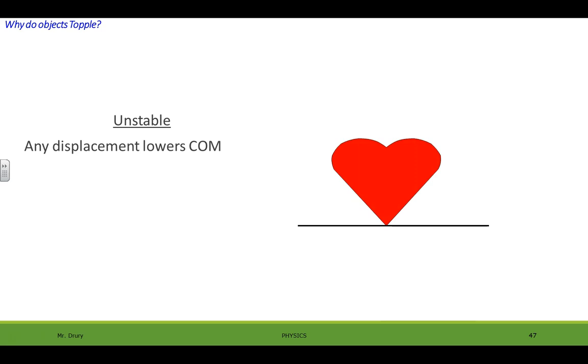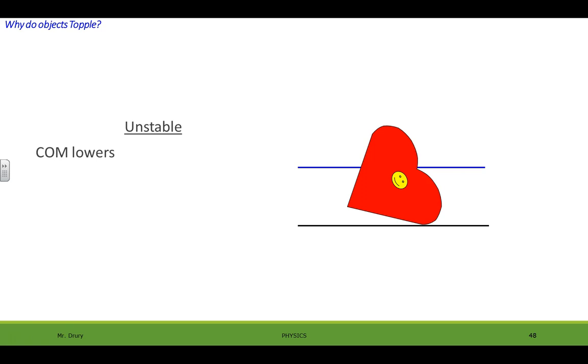And here's unstable. Any displacement lowers the center of mass. So it kind of wants to do this. So we have the center of mass is the smiley face. Here's a line that I put there as a reference point. So obviously it topples over and the reason being is the center of mass wants to go down, because it was kept artificially high. So that would be unstable equilibrium.